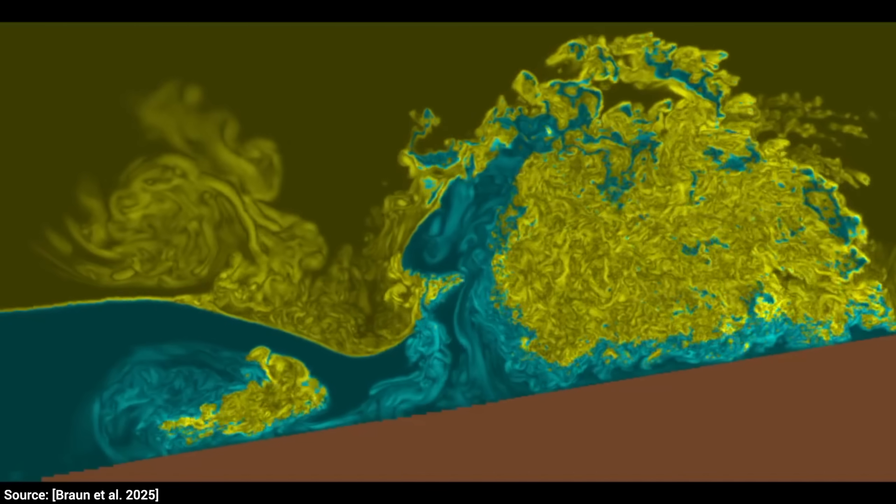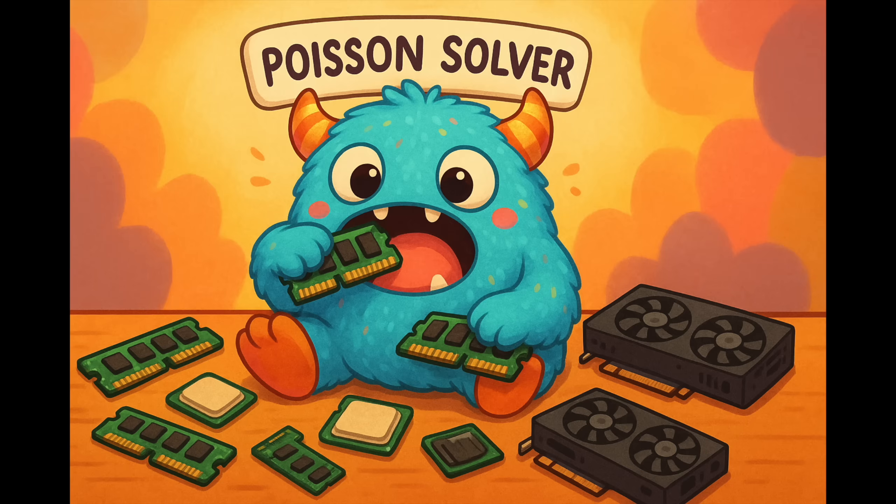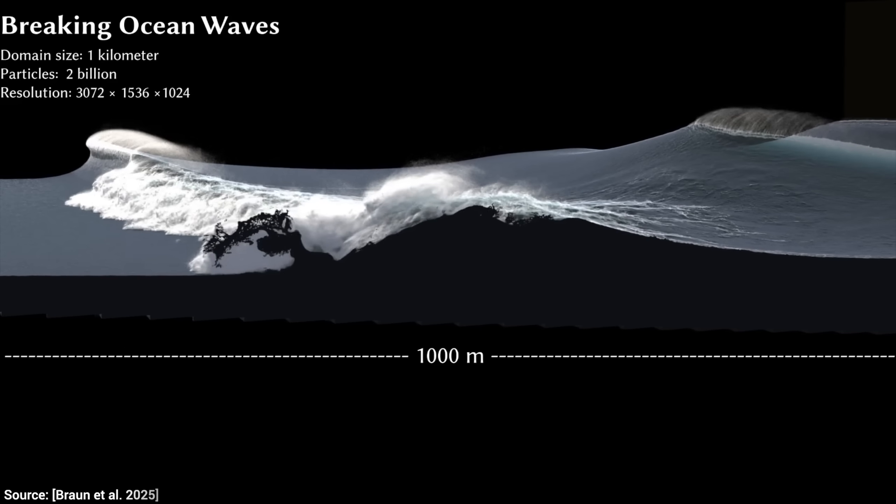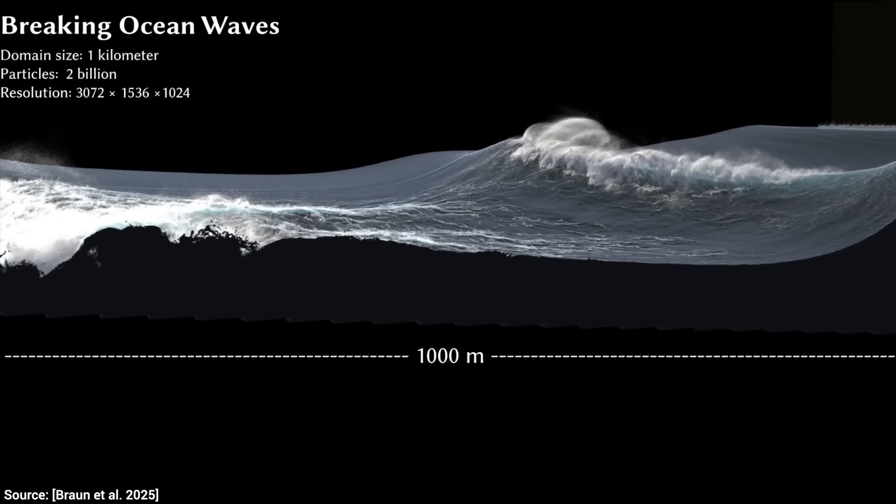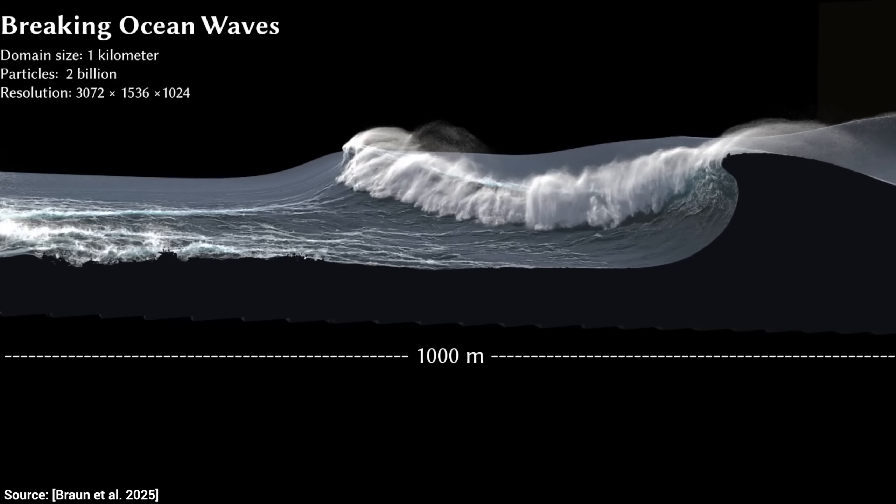And three, it has a fast adaptive poisson solver that keeps the pressure computation from eating all the runtime. Think of it as a super-efficient city hall clerk who processes everyone's paperwork in parallel, instead of letting the line go around the block.